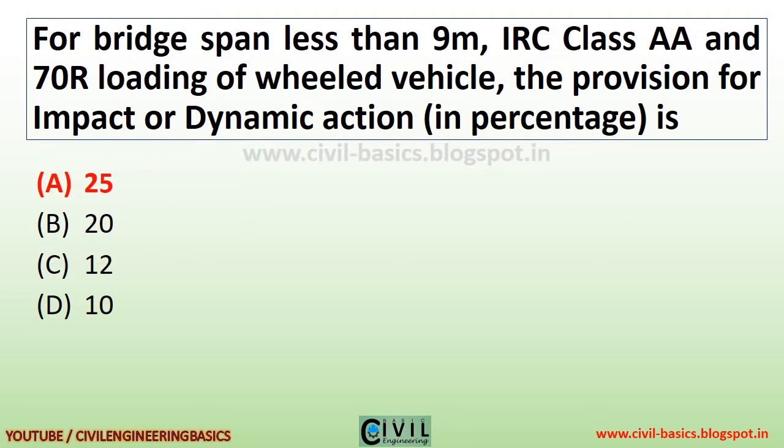For a bridge span less than 9 m, with IRC Class AA and 70R loading of wheel vehicle, the provision for impact or dynamic action in percentage is 25%.